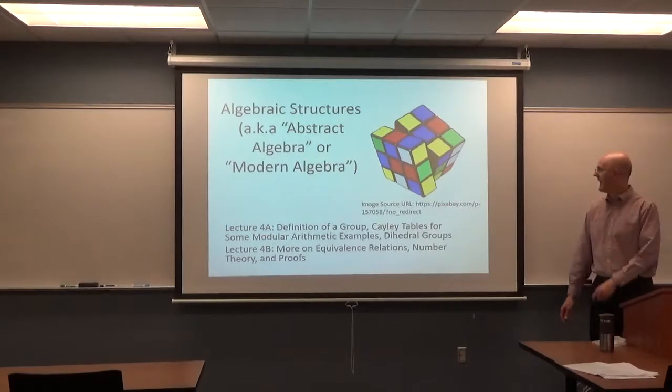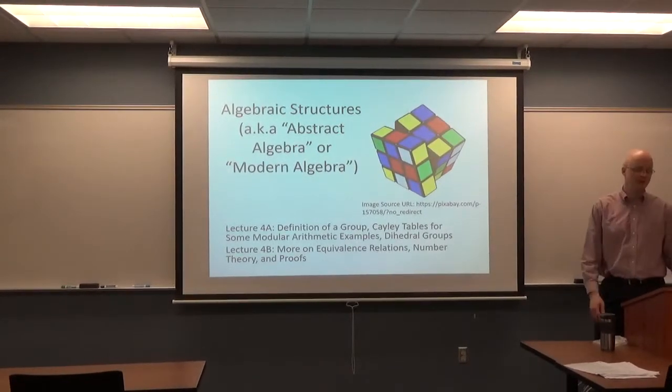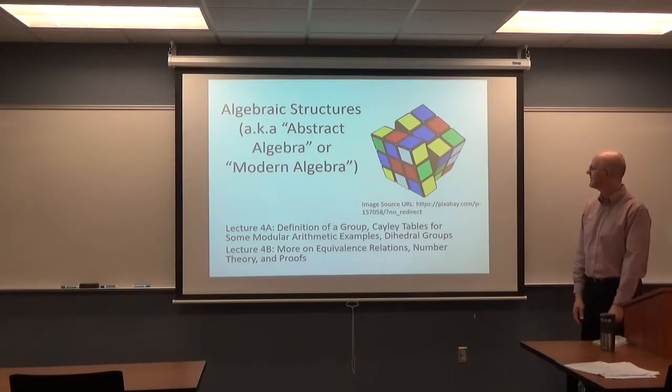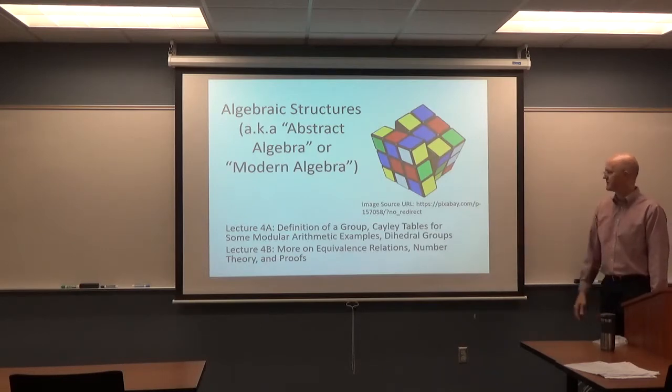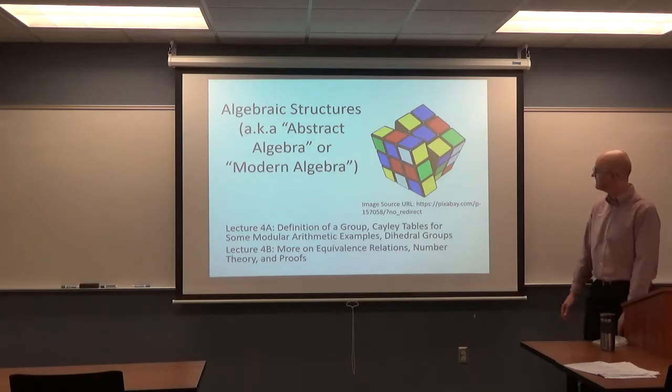All right. So lecture 4A, we'll look at the definition, the formal definition of a group. Talk about something called Cayley tables, which you've read about. Maybe do a proof or two related to the definition of a group. If we have time, arithmetic examples and start talking about dihedral groups, that may carry over into lecture 4B where we talk a little bit more about equivalence relations, number theory, and proofs. We'll see how we are as far as time goes.